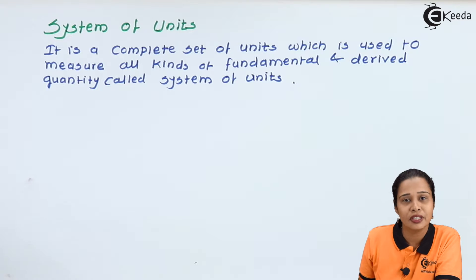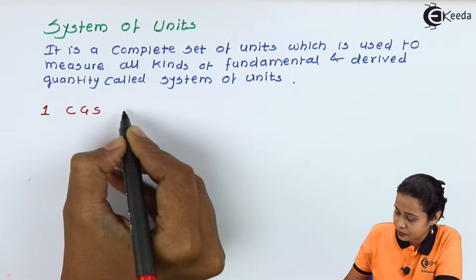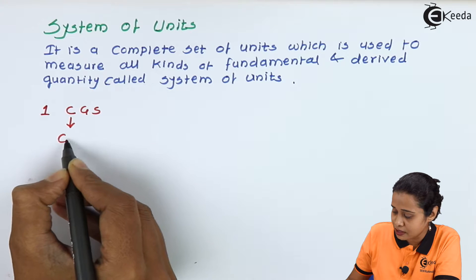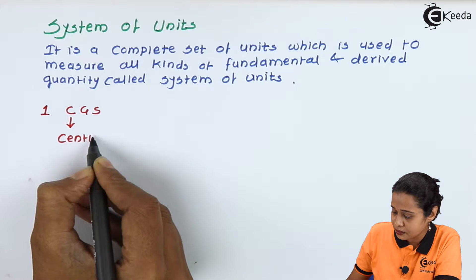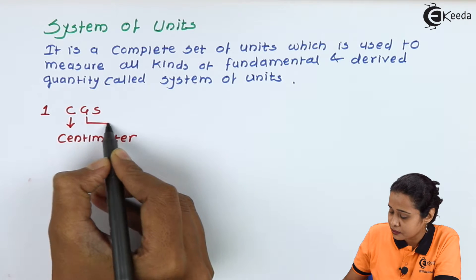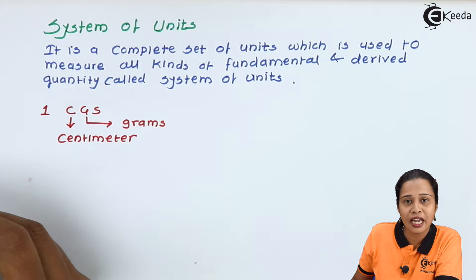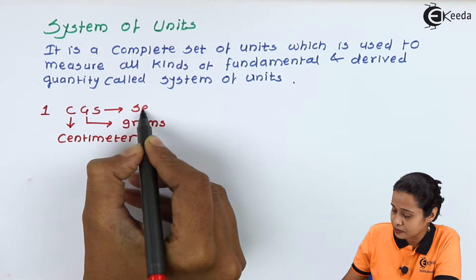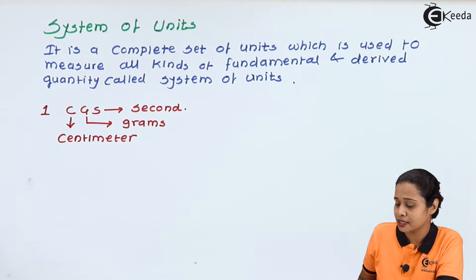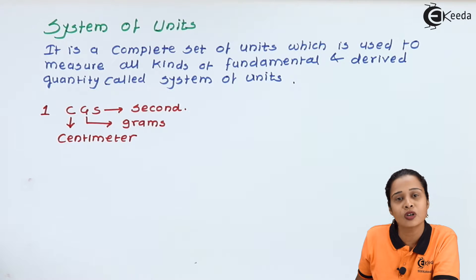Let us start with the first system that is CGS. Now in case of CGS system we measure length in centimeters. We measure mass in grams and we measure time in seconds.